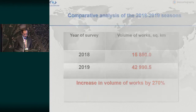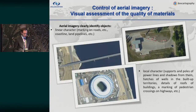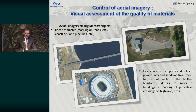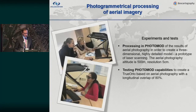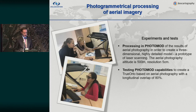Speaking about the images themselves, the Photomod software allowed us to control quality, which resulted in acceptable interpretation properties. You can clearly identify linear objects such as road markings, coastlines, power lines, power line poles, and their shadows. Regarding experiments and testing to understand the range of use of this system, our specialists are actively doing experimental work based on the aerial photography projects.